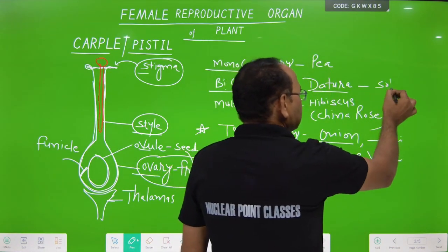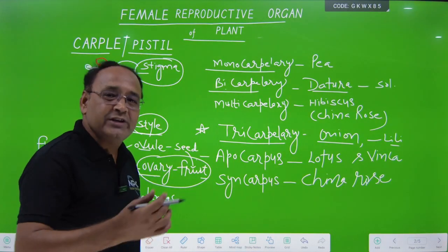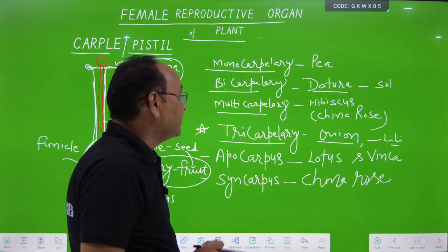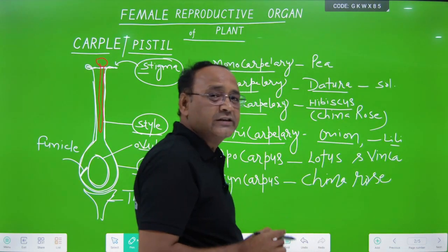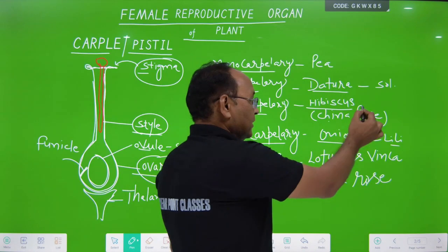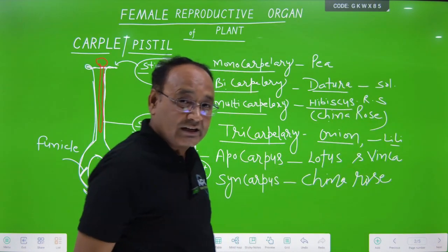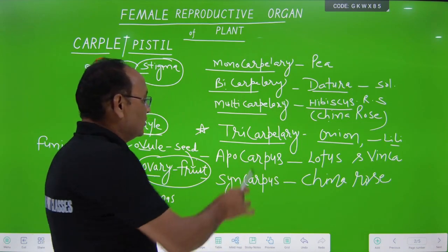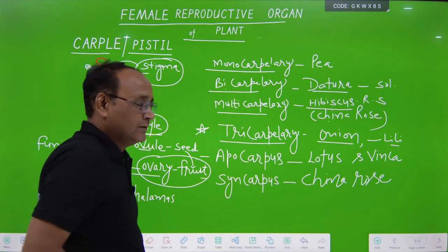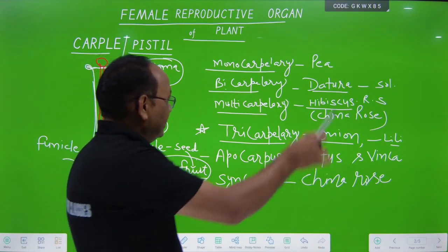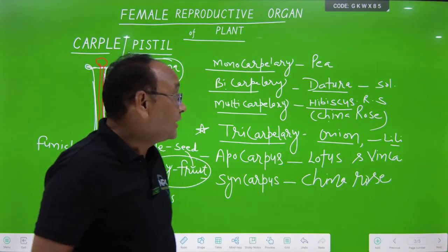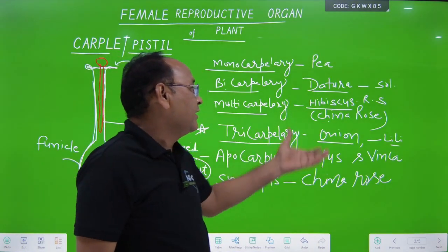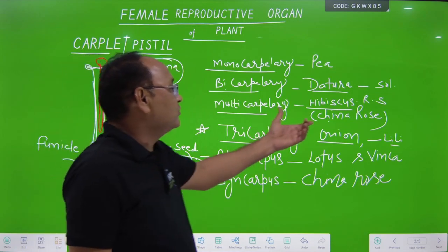If carpels are more than three, such type of condition is known as multicarpillary, and multicarpillary condition is present in Hibiscus rosasinensis, also known as China rose, which belongs to the Malvaceae family. To summarize: monocarpillary — 1 carpel, bicarpillary — 2, tricarpillary — 3, multicarpillary — more than three.